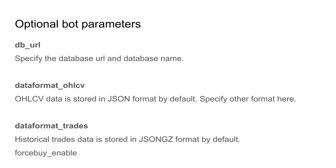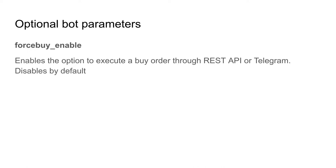The data format OHLCV and trades parameter can be used if you really need to use another format for storing this information — otherwise, I see not much added value in changing it. The force buy enable option, which is set to false by default, lets you execute buy orders via Telegram or REST API by hand, even though the strategy doesn't say it should buy that pair. If you buy a pair using this option, the bot will hold it until a manual or strategy sell order is given. I can imagine using this to buy the dip, but you have to be absolutely sure the dip is within a bullish trend and not the start of a bear trend, otherwise you could lose a lot of money.